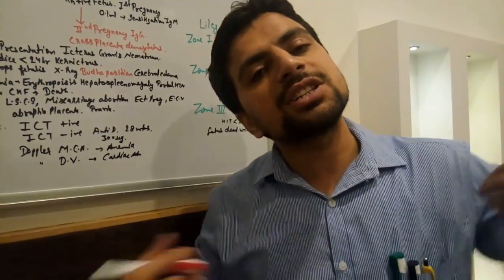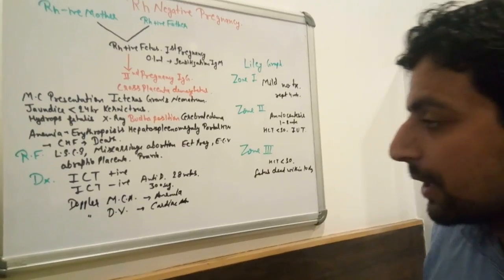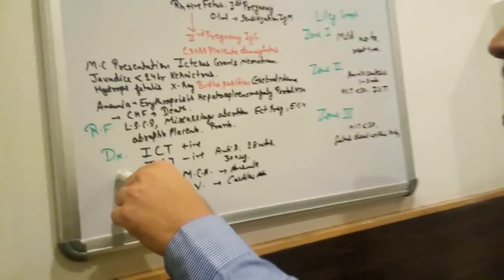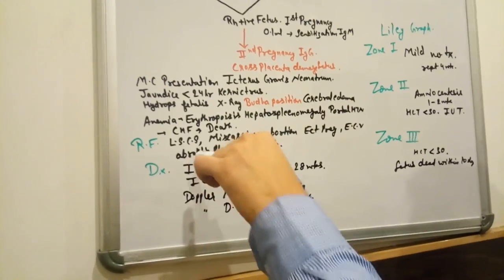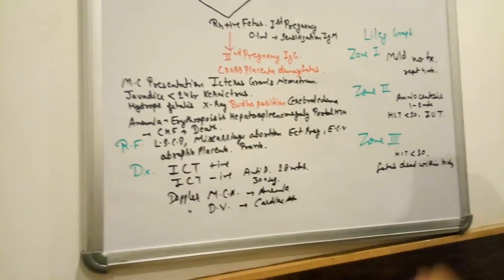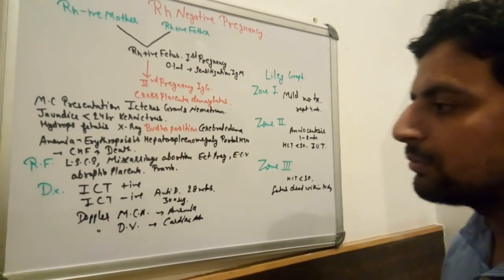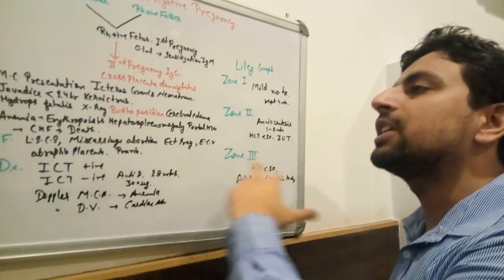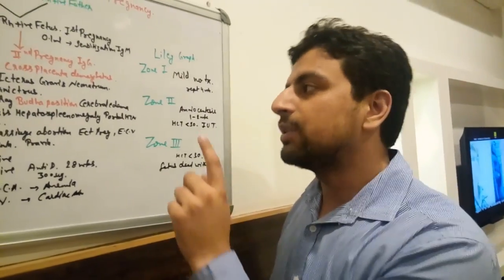How to diagnose? We diagnose by indirect Coombs test. If indirect Coombs test is positive in mother, then we do not need to give anti-D Rh immunoglobulin G antibodies to the mother because she already has antibodies against the antigen.